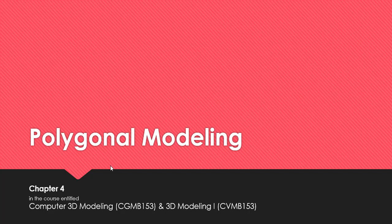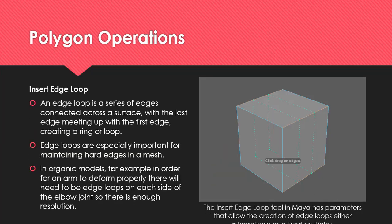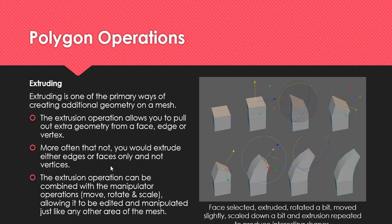There are many modeling methods — NURBS, digital sculpting, and others. We haven't done digital sculpting so I'll never ask how to execute it. I will ask about polygonal modeling in Section C as well as NURBS modeling — that's why you need to really understand NURBS modeling. Understand how you build curves, what operation to use, go through the lab tutorials — all the loft, revolve, extruding of NURBS surfaces. So two things: NURBS modeling and polygonal modeling. That's about it for Chapter 4.